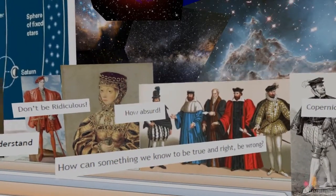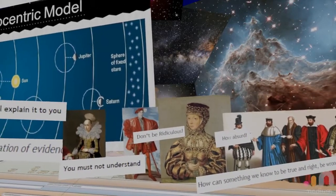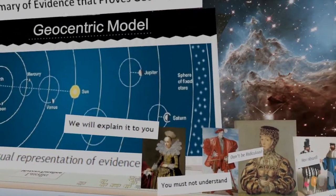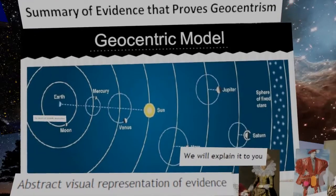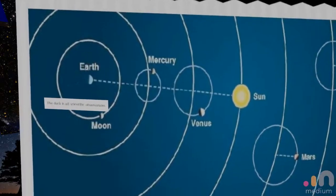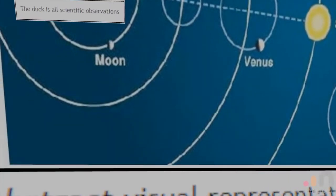how can something that we know to be true and right possibly be wrong because it's been right for a thousand years? Okay Copernicus, we know that you're a little slow, so we're just going to summarize all the scientific data that we have and paint a nice simple picture. As we've collected data over the years, they've formed a picture of a duck.